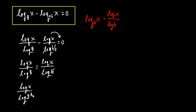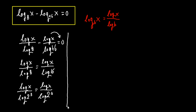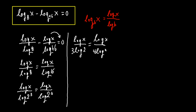We can write log 8 as log 2 to the third power and log 16 as log 2 to the fourth power. Moving the powers down, this becomes log x over 3 log 2 equals log x over 4 log 2.